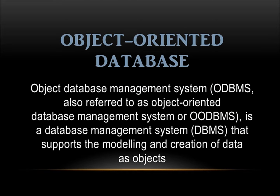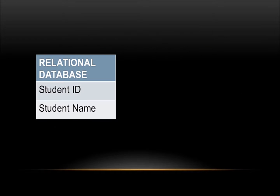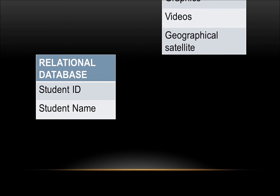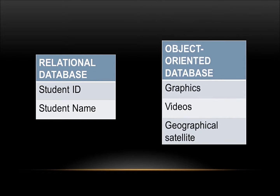An object-oriented database is a database management system that supports the modeling and creation of data as objects. An object-oriented database can store complex data, whereas a relational database can only store simple data. A relational database can store data such as student ID and student name, whereas an object-oriented database can store hypermedia such as graphics, videos, and geographical satellite information.